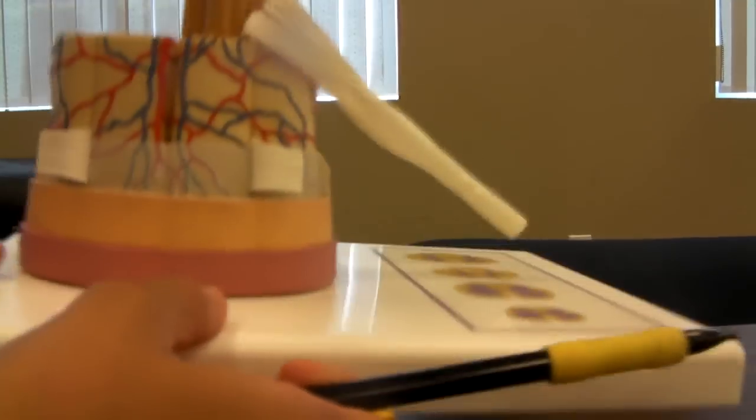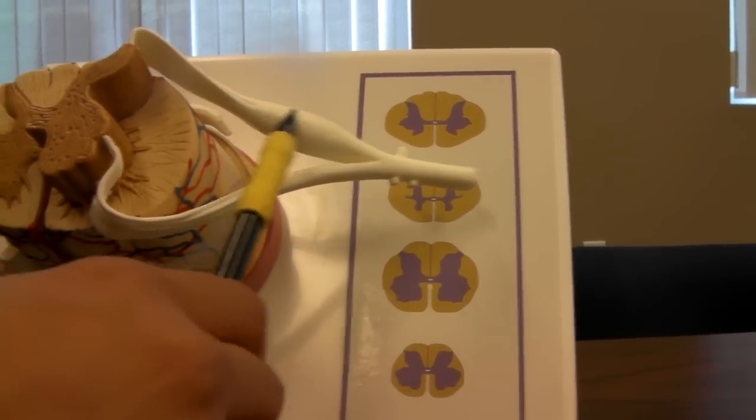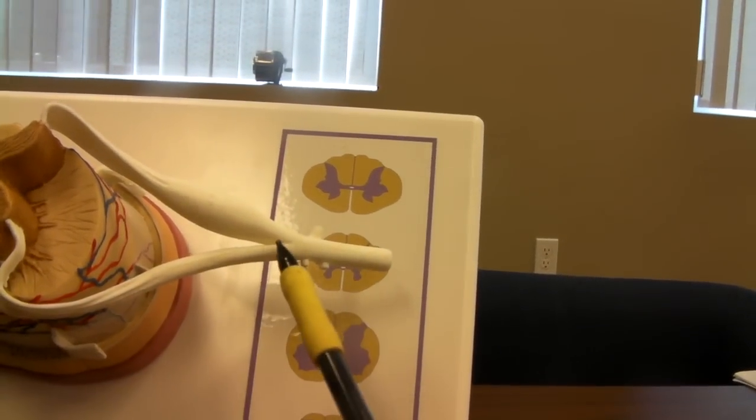This is the ventral root, this is the dorsal root ganglion, this is the dorsal root, and they form together to make the spinal nerve.